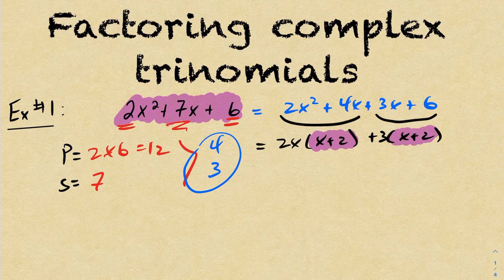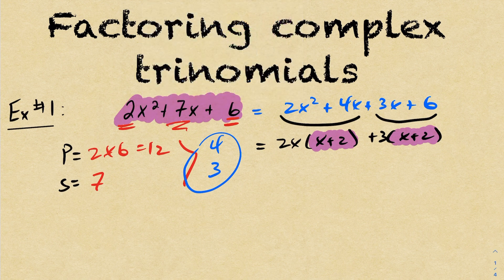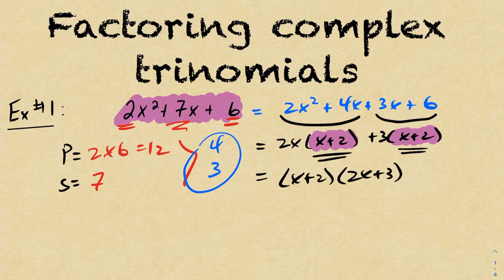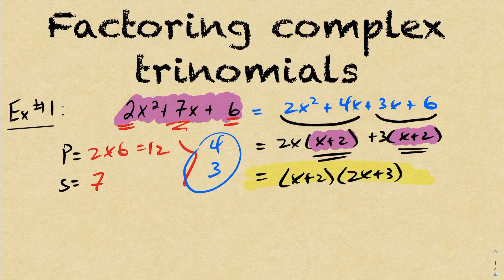Now when you go through this process, we have a common factor — and this will happen every time you're doing decomposition. So I'm going to factor that out of both terms, leaving me with 2x plus 3. And now our quadratic is fully factored.